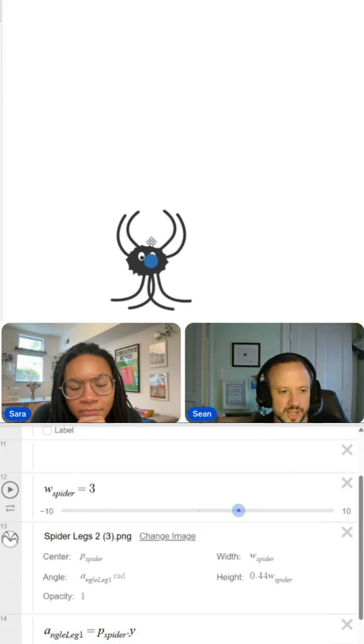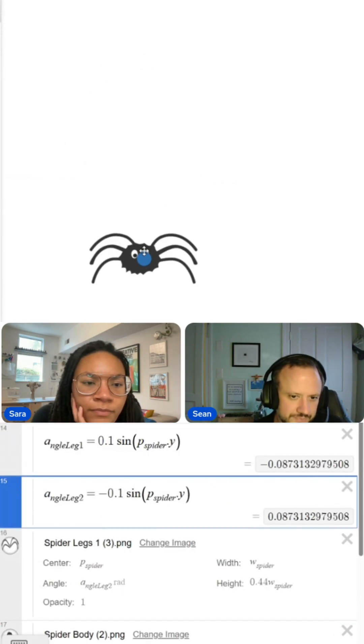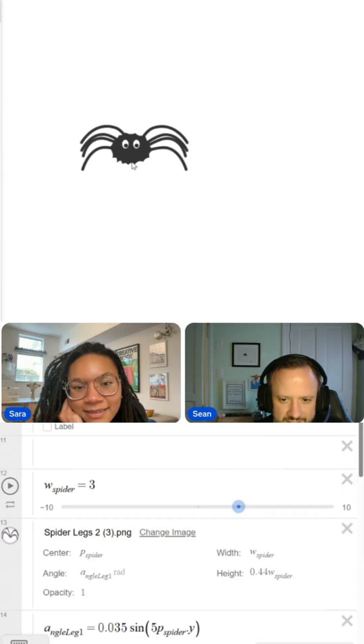So it just like spin like a helicopter, helicopter spider. So that's why we're going to use sine. So maybe 0.1. I kind of want to see like less, more. Oh my gosh. There we go.